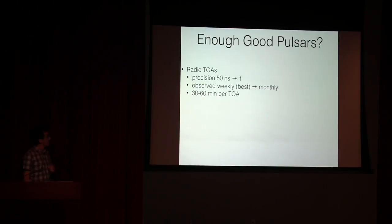So aren't there enough good pulsars? In the radio right now we're timing tens of pulsars. The best precision that we're getting right now is about 50 nanoseconds, and the worst, I should say one microsecond, not one nanosecond. So the best ones are about 50 nanoseconds, the worst that we bother time are about one microsecond. We observe them every week for the best ones, every month for the poor ones, and it takes roughly half hour to an hour per radio telescope observation to get one of these measurements.